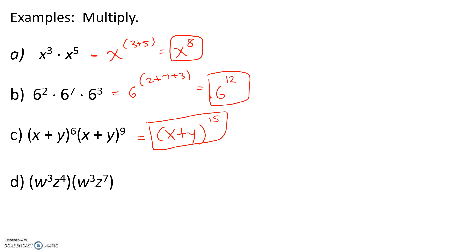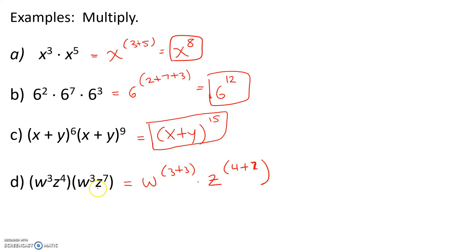Next, we have w to the 3rd times z to the 4th, times w cubed times z to the 7th. Now, we have two different bases here. So, when we multiply, we will multiply the same bases together. We have w to the 3rd times w to the 3rd, which gives us w to the 3 plus 3. And then we have z to the 4th times z to the 7th, which gives us z to the 4 plus 7. When multiplying the same base, add the powers and keep the base. This is equal to w to the 6th times z to the 11th.